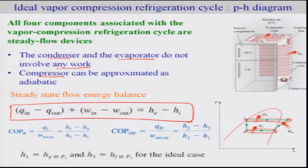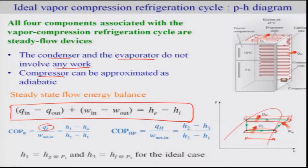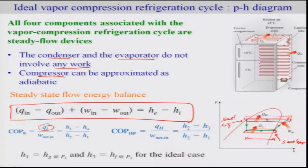Using this, one can find the COP_R: Q_L equals H1 minus H4, and W_net equals the enthalpy change across the compressor, which is H2 minus H1. Similarly, COP_HP gives Q_H as H2 minus H3, divided by W_net. For ideal conditions, the refrigerant is saturated vapor before entering the compressor and saturated liquid after the condenser. Thus H1 equals H_g at P1, and H3 equals H_f at P3.